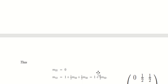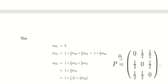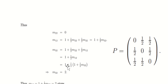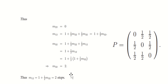M3-2 is equal to 1 plus one-half times M2-2, which we know is zero, plus one-half times M1-2. Since M2-2 equals zero, this simplifies to 1 plus one-half times M1-2. Substituting M1-2 in, we can solve and find M3-2 is equal to 2. Therefore, we can use the system of equations to find M1-2 is equal to 1 plus one-half times M3-2, which gives us M1-2 equals 2 steps.